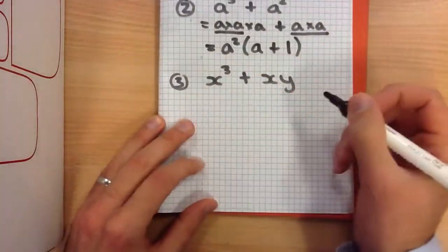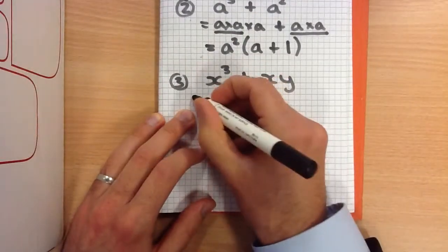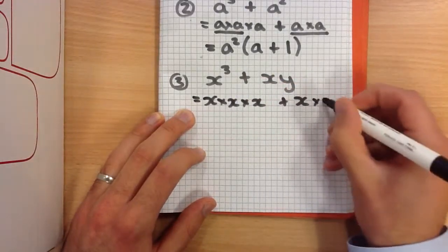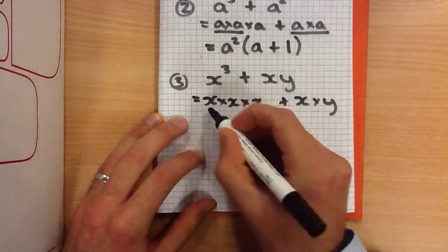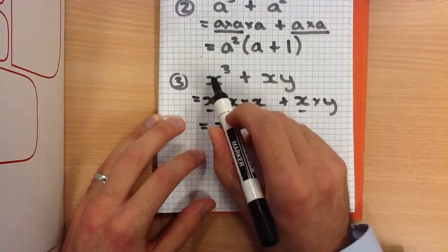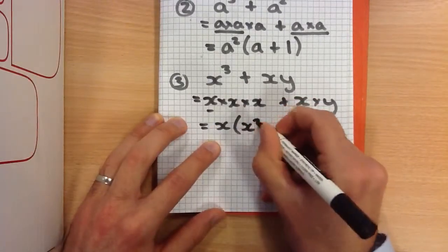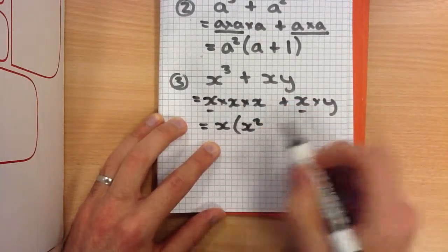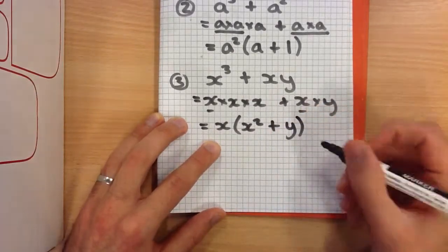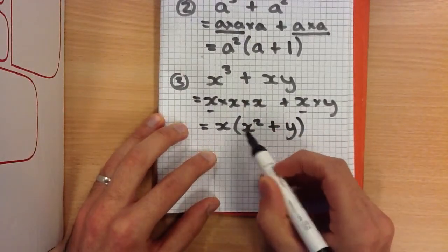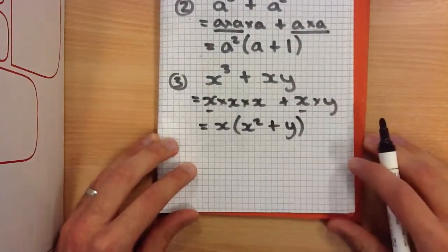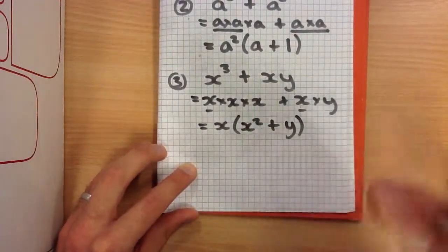And then finally, a third example: X cubed. Just like before, if it helps you, that means X times X times X, plus X times Y. What can you see in both bits? Well, just one X in both bits, so that's my common factor. What do I multiply X by to get X cubed? I have to multiply it by X squared. And what do I multiply X by to get XY? Well, I just multiply it by Y. Check: X times X squared is X cubed, and X times Y is XY — so I know I've got those right by expanding it.